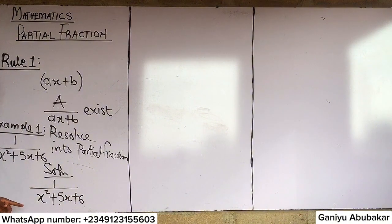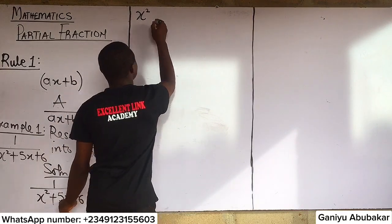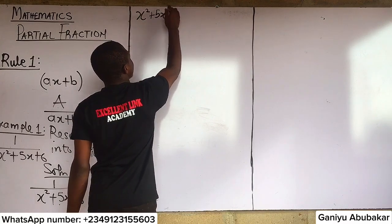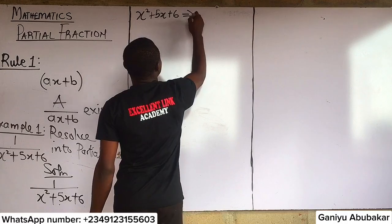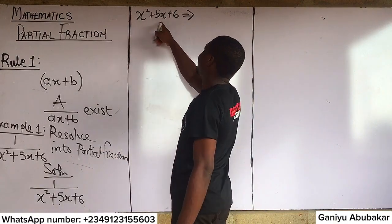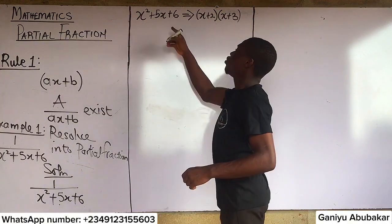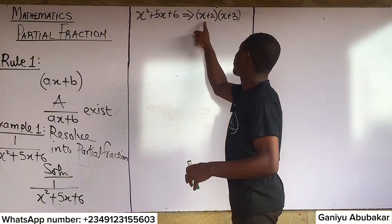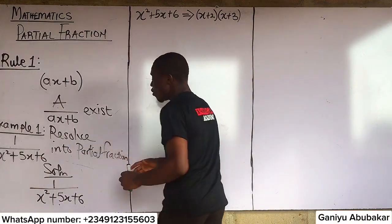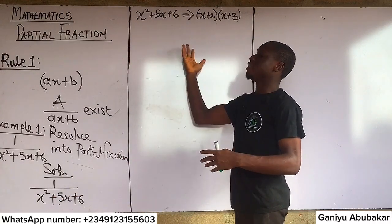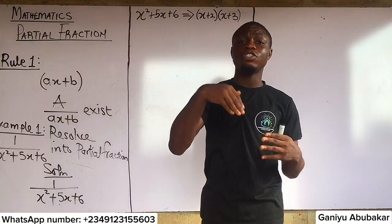Your first task is to consider the denominator. My denominator here is x² + 5x + 6. I need to factorize it. Solving this quadratically gives the roots (x + 2) and (x + 3). You can use any factorization method — factor method, completing the square, the quadratic formula — I'll drop a link in the description.